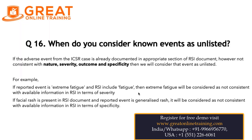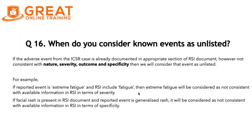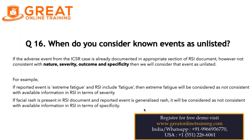Another example: if facial rash is present in the RSI document but our case has the event of generalized rash, then we will consider that event of generalized rash as unlisted under the criteria of change in specificity, because the RSI document includes only facial rash but the reported event is a generalized rash. For this question, you need to answer with these four points: nature, severity, outcome, and specificity.